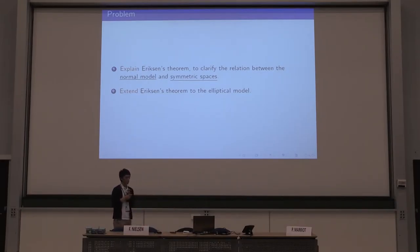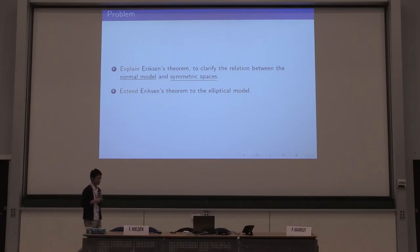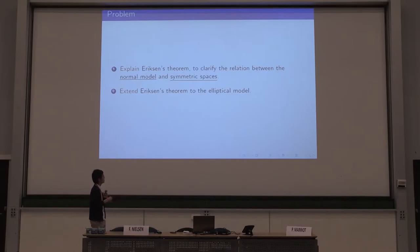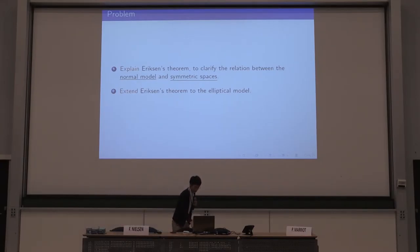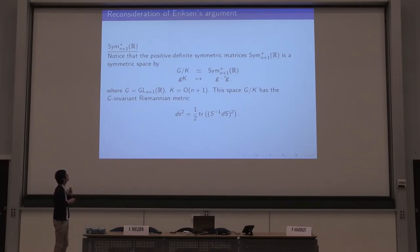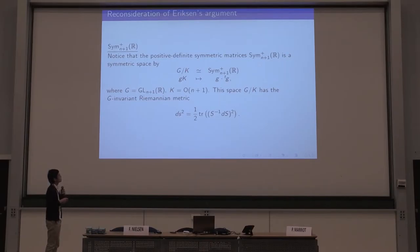We want to give some explanation to clarify the relation between the normal model and the symmetric spaces. With the group theoretical study, we also want to extend the theorem to the elliptical model. The elliptical model is a statistical manifold defined from a family of elliptical distributions. For the first problem, we take an embedding of the normal model into the symmetric space Sym(N+1, +). We notice that this set Sym(N+1, +) is a symmetric space by this map.